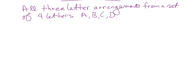4P3. So 4P3 is 24 — 24 different arrangements, right? Different means distinguishable — we can tell them apart.